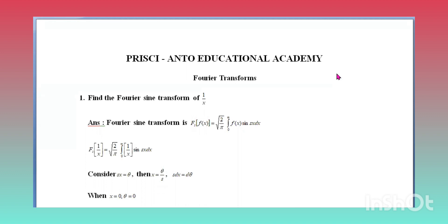Problem number one: find the Fourier sine transform of 1 divided by x. The Fourier sine transform formula is Fs of f(x) equal to the square root of 2 divided by pi, integral over the limit 0 to infinity of f(x) sin(sx) dx. For f(x) = 1/x, we apply this in the next step.